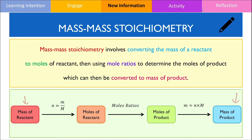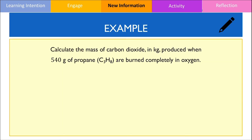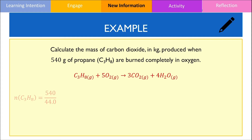Let's go through an example. We want to calculate the mass of carbon dioxide gas produced in kilograms from 540 grams of propane which undergoes complete combustion. The equation for the complete combustion of propane should look like this. From here, we calculate the number of moles of propane by dividing 540 by its molar mass, giving an answer of 12.3 moles.